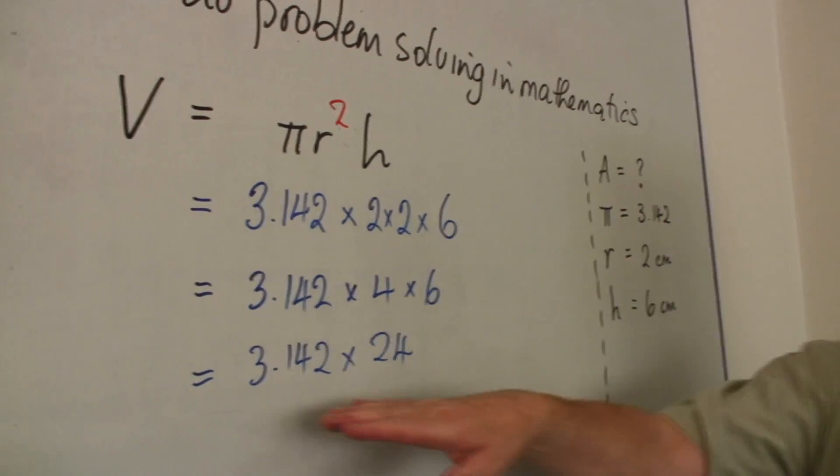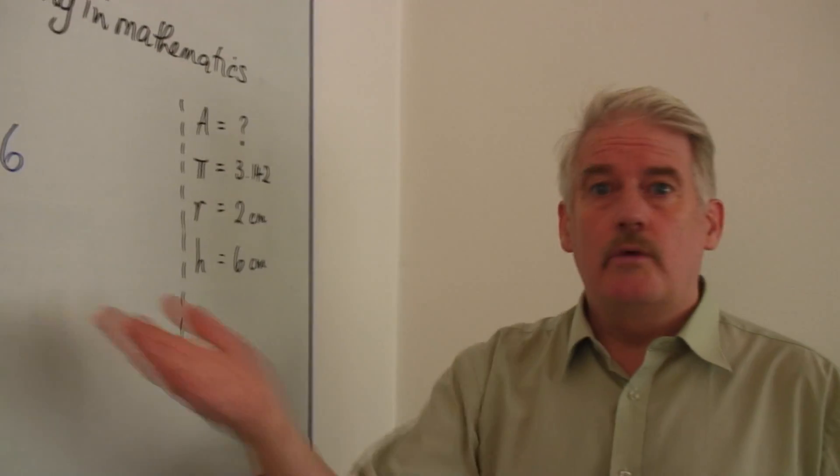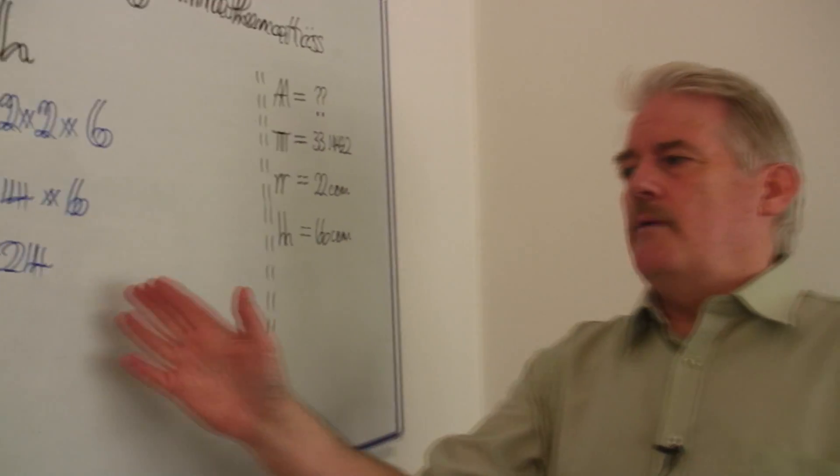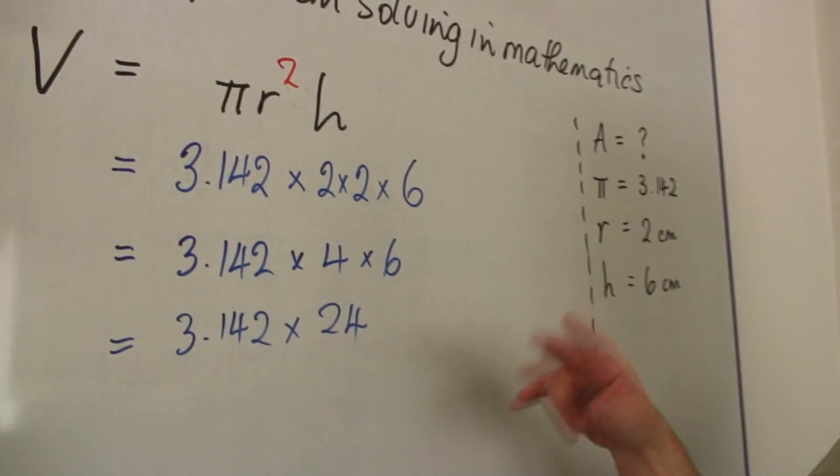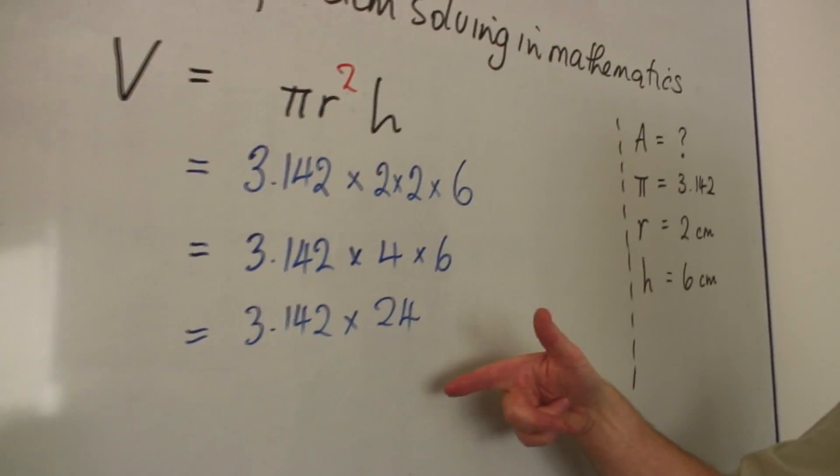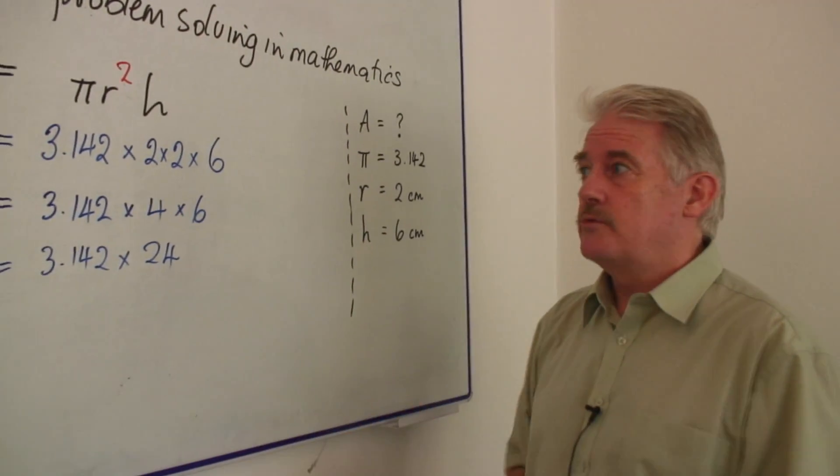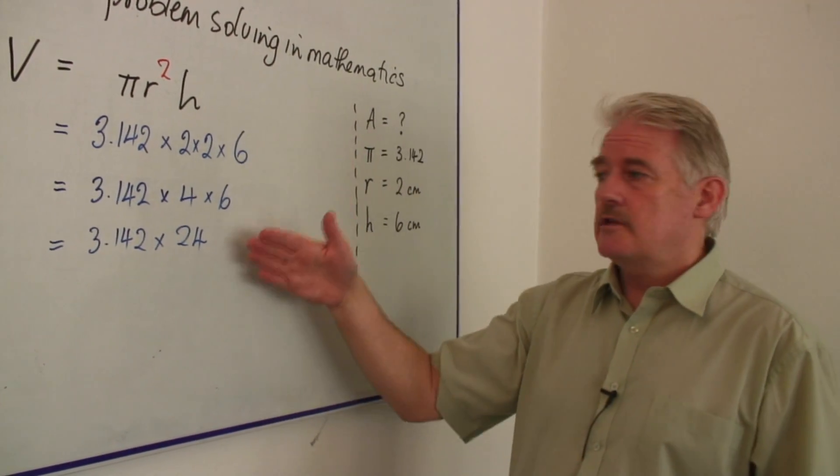Now, this gets us to an answer, and we work out whatever the answer is. Somewhere around 80. But I'm not really bothered what the answer is. I'm interested in seeing what the process is. And so are people who look at your solutions to problems. So make sure the process is clear.